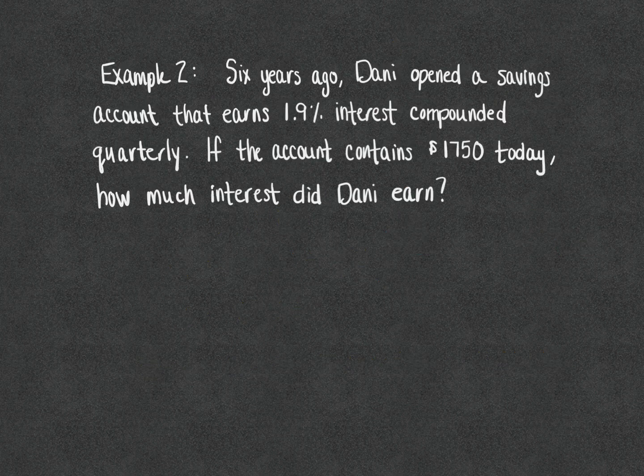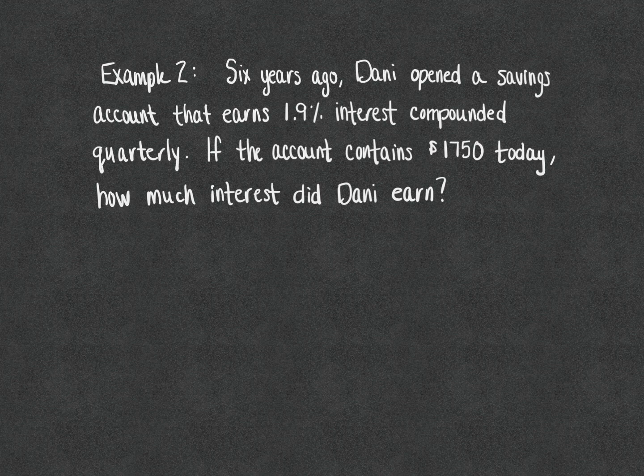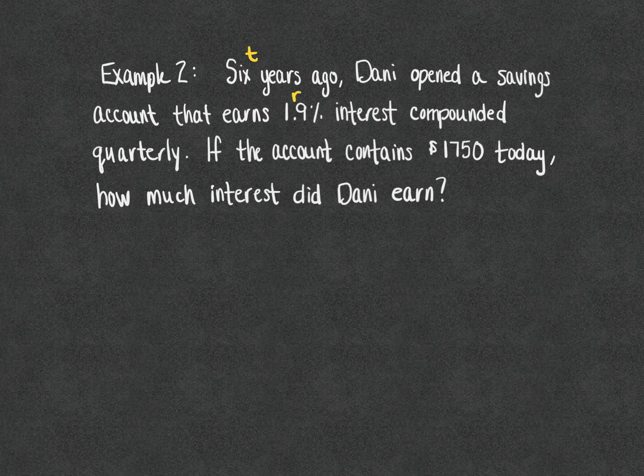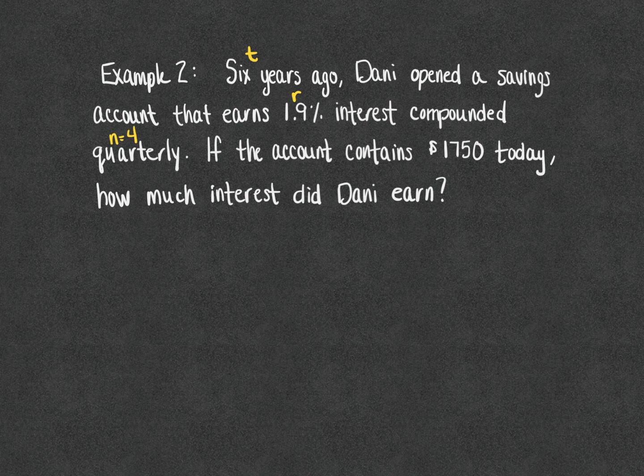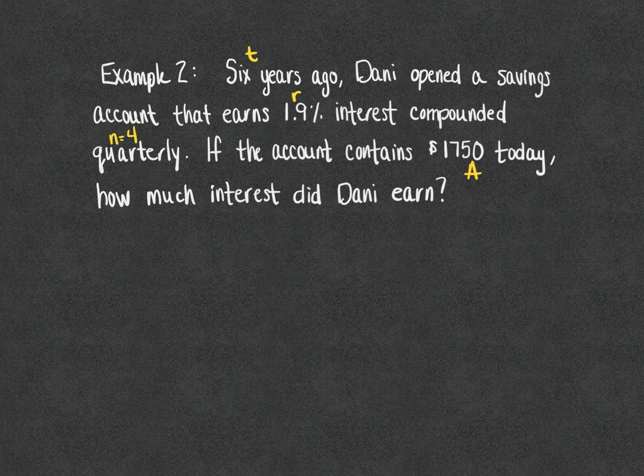Moving on to one more example: Six years ago Dani opened a savings account that earns 1.9% interest compounded quarterly. If the account contains $1,750 today, how much interest did she earn? So six years ago, there's our t, our 1.9% is our interest rate. Compounded quarterly tells us n is 4, and the account contains $1,750 today, that is the total in the account. What we don't know is how much money she started with.